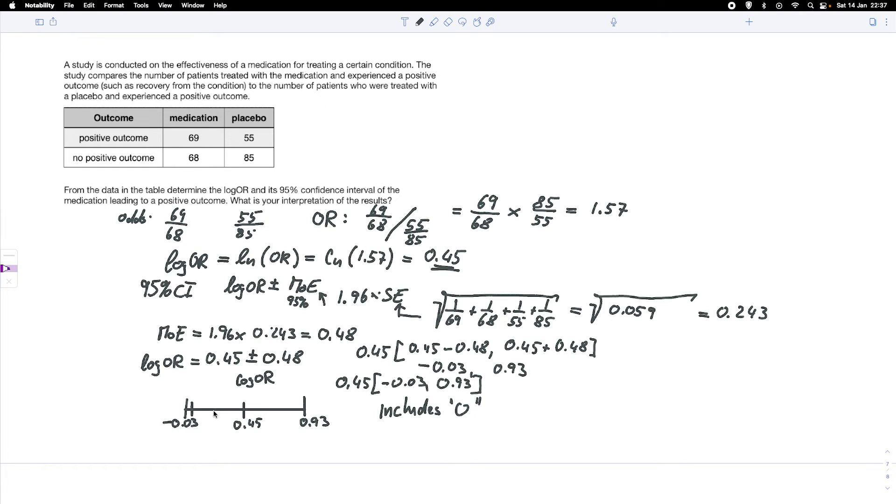It includes 0. That the true population log odds ratio is 0. So it could happen that the true log odds equals 0. Now, what does that actually mean?